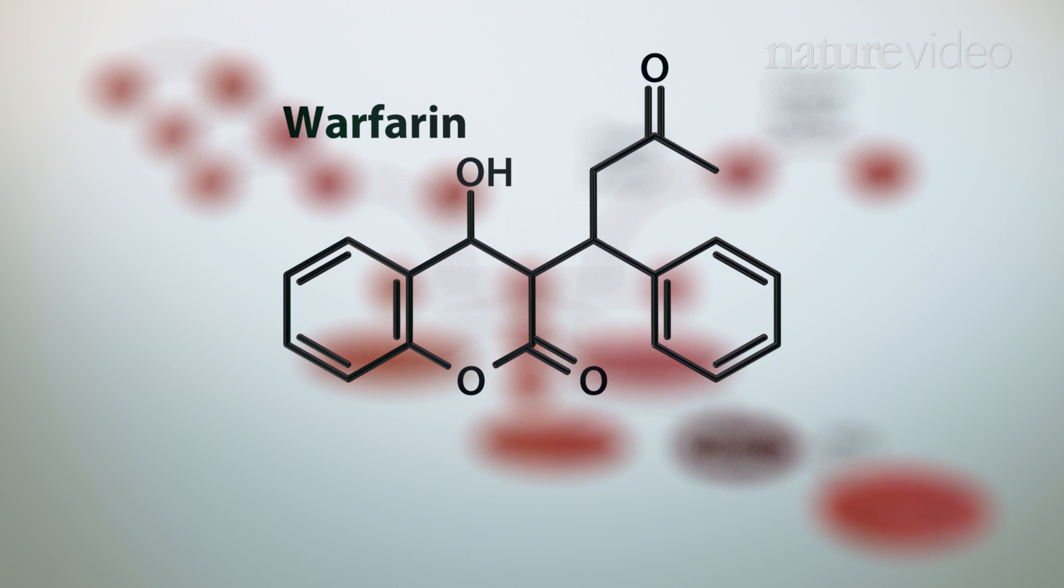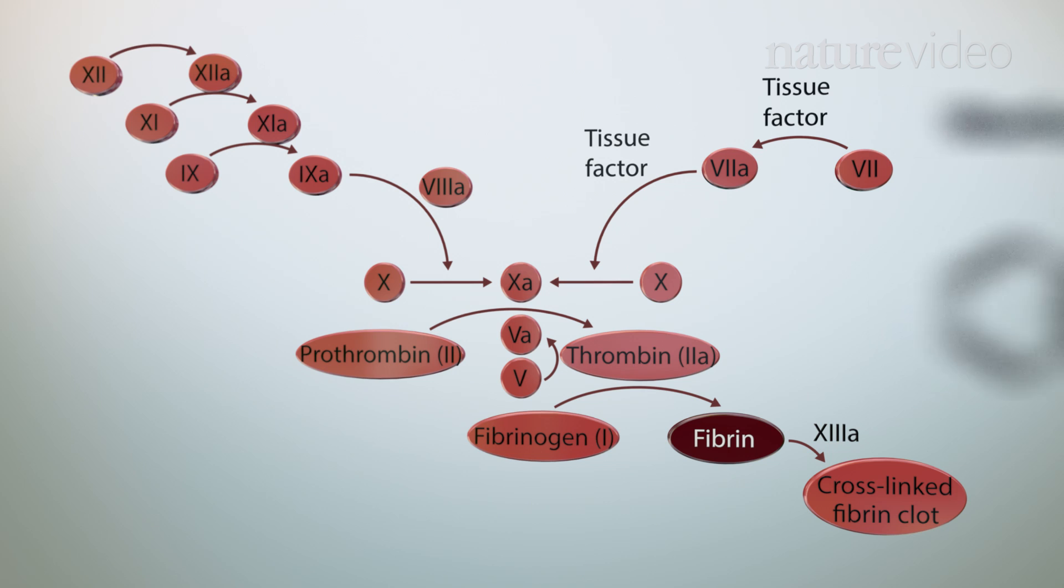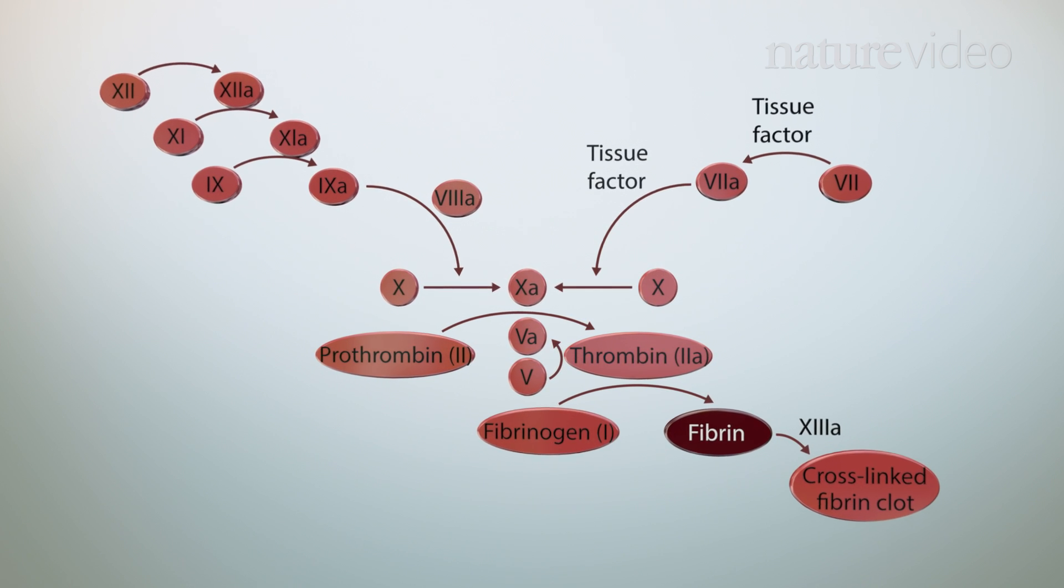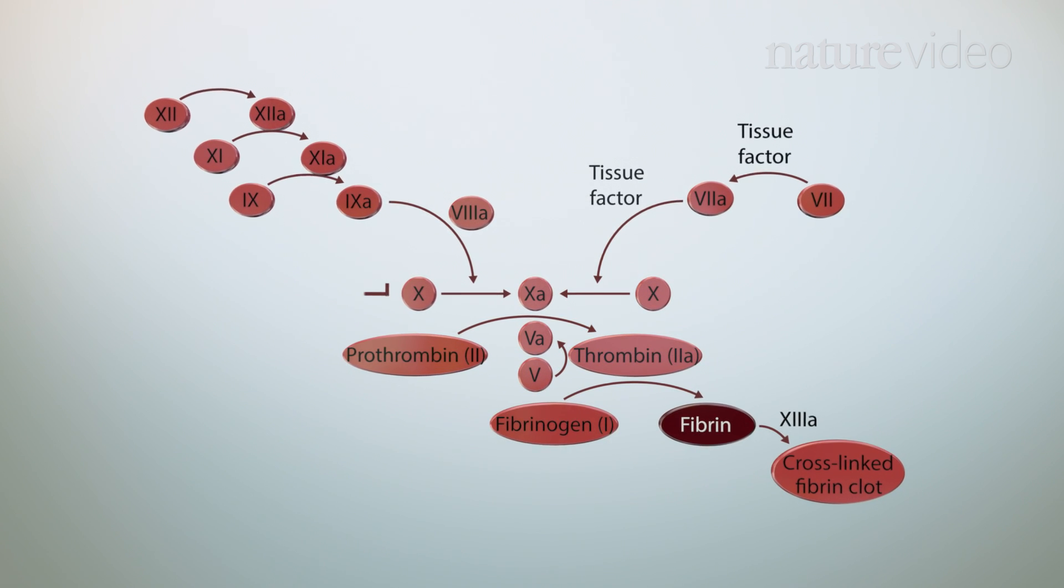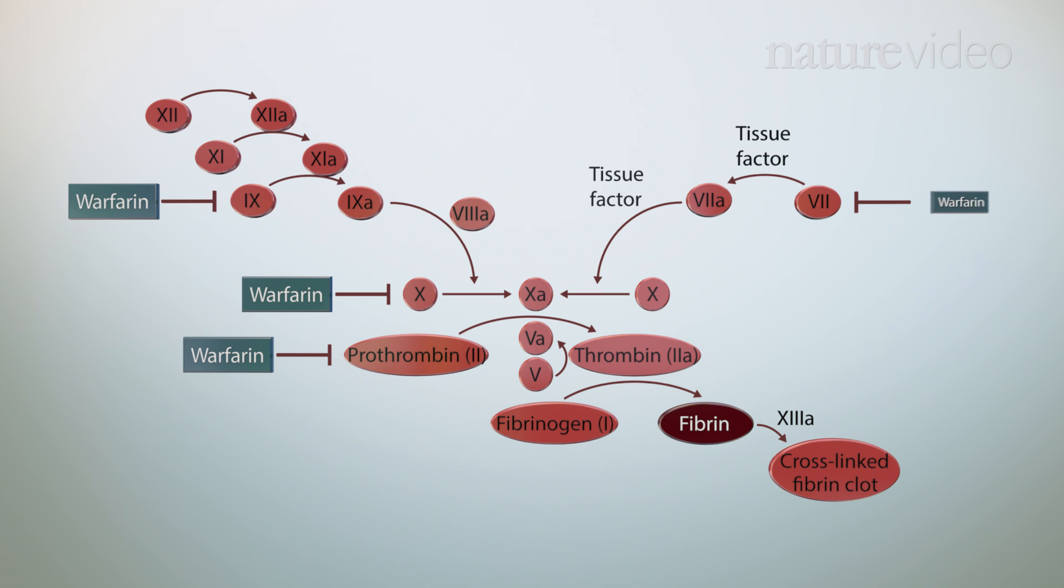Warfarin is one such medicine. It's an oral anticoagulant drug that's been used for around 60 years. Warfarin prevents clotting by lowering the levels of active vitamin K, a molecule essential for the maturation of a number of the blood coagulation factors.